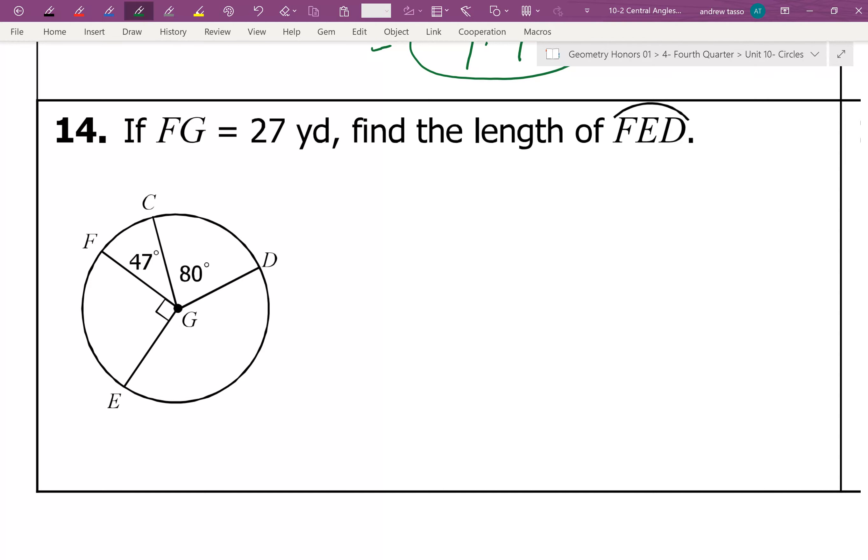So first of all, they're giving us the fact that FG is 27, so that's our radius of our circle. Next we can figure out all the degree measurements. So right away I see a 90 degree angle here, and if you think of it, this would be the rest out of the 360.